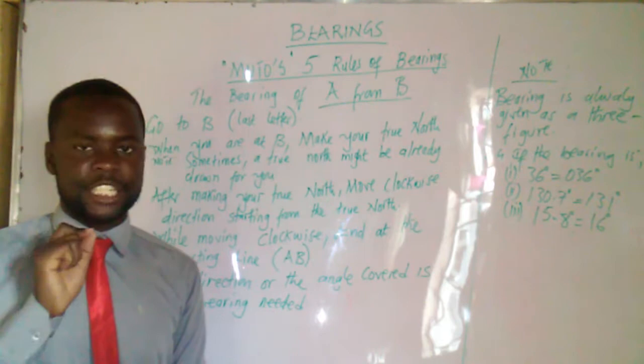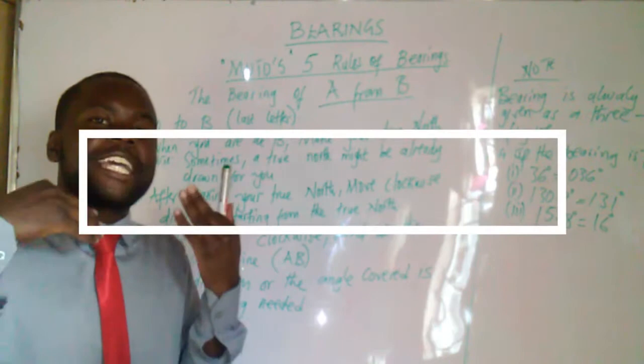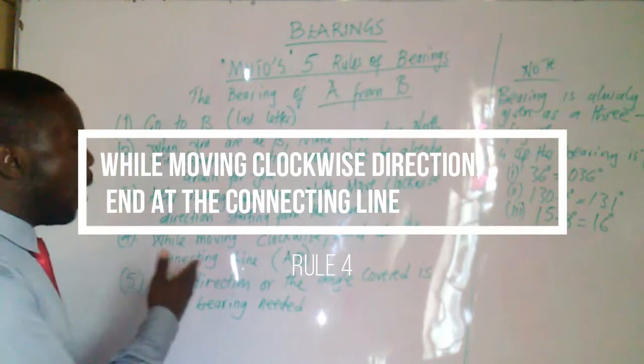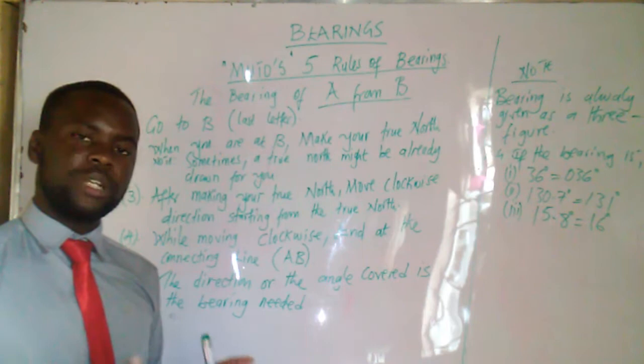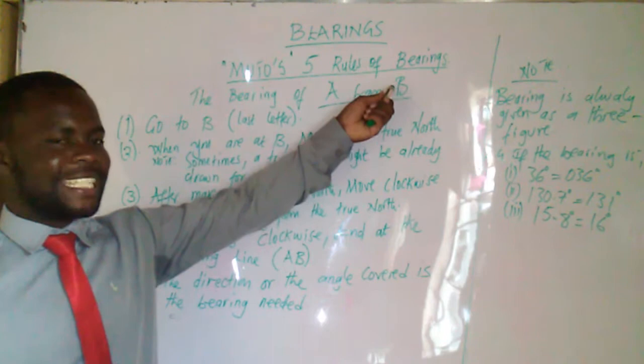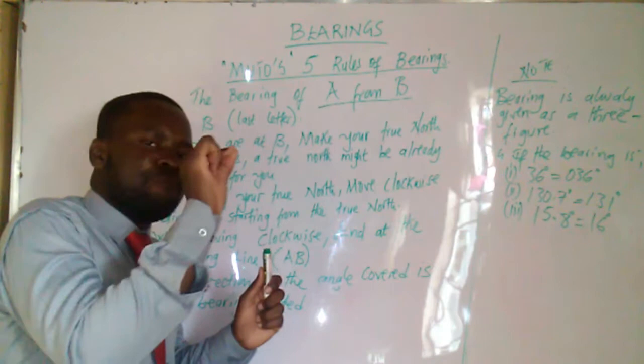When you are moving clockwise direction, where do you end? After moving clockwise direction starting from your true north, it will give rise to rule number 4. Rule number 4 is saying, while moving clockwise direction, end at the connecting line. What is a connecting line in this case? The connecting line is a line which is showing the two letters which are given to you. For example, it is a bearing of A from B. So the connecting line is line AB. This means that when you are moving clockwise direction starting from your true north, end at line AB. Immediately when you reach line AB, end from there.